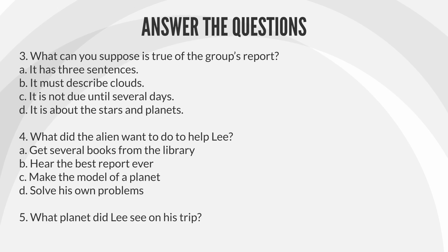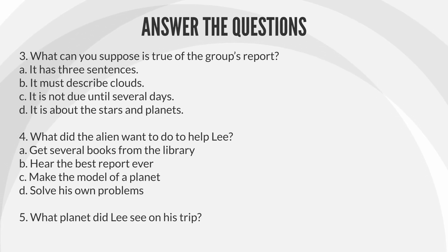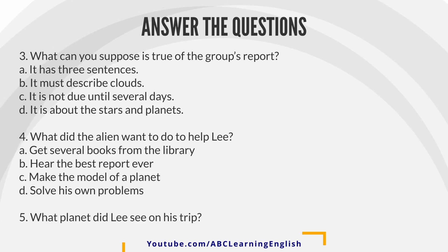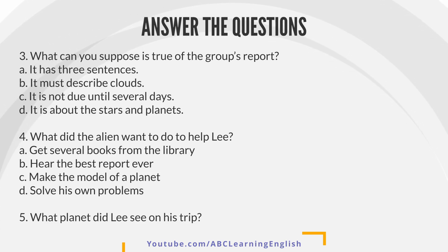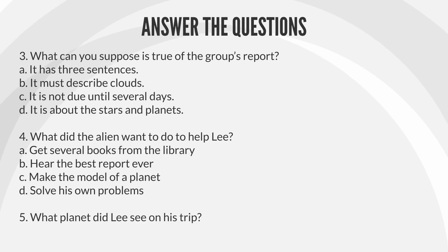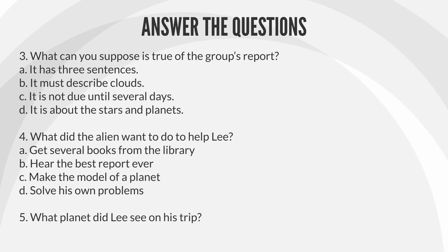Question 3: What can you suppose is true of the group's report? A. It has three sentences. B. It must describe clouds. C. It is not due until several days. D. It is about the stars and planets.